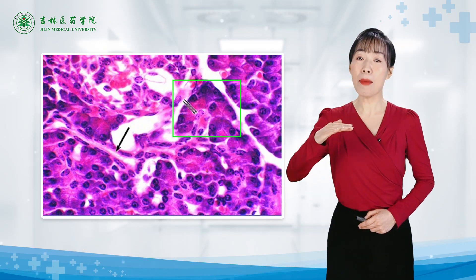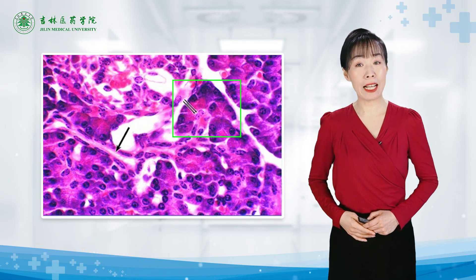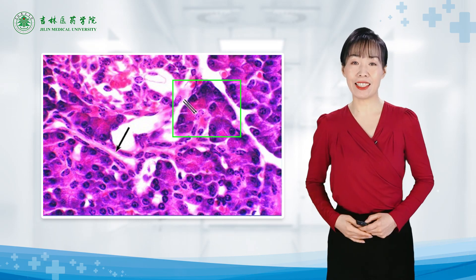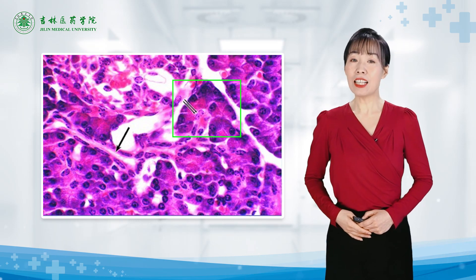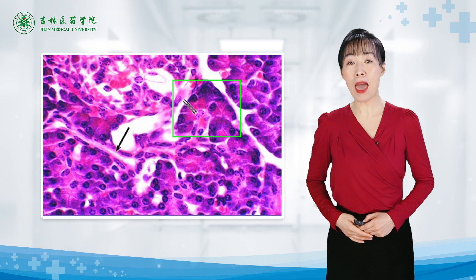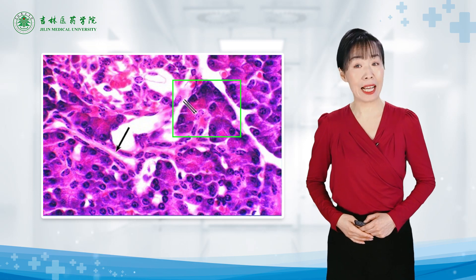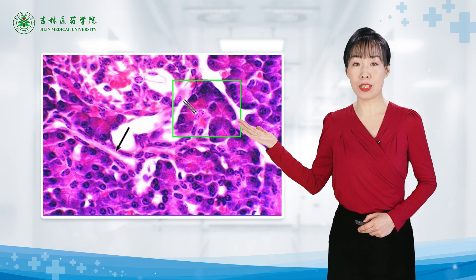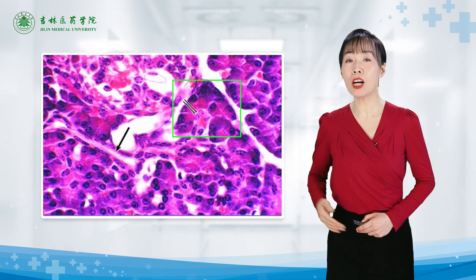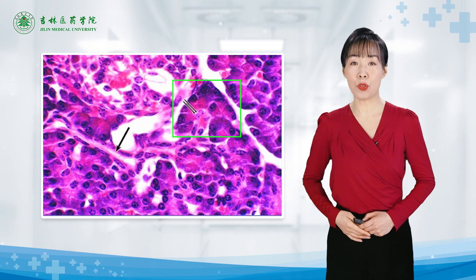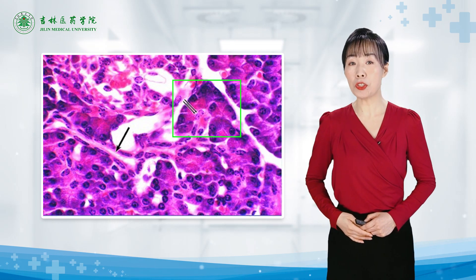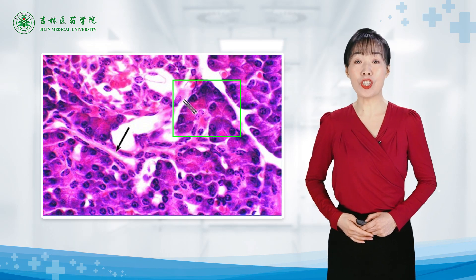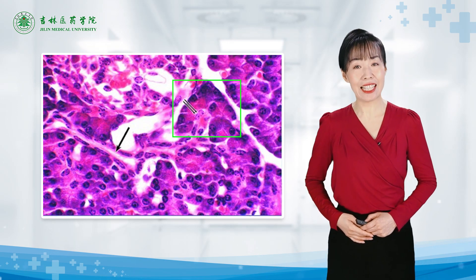The apical portion of the cytoplasm appears strongly acidophilic. The nuclei are surrounded by a pale cytoplasm. The double arrows belong to centroacinar cells that constitute the intra-acinar portion of the intralobular duct.